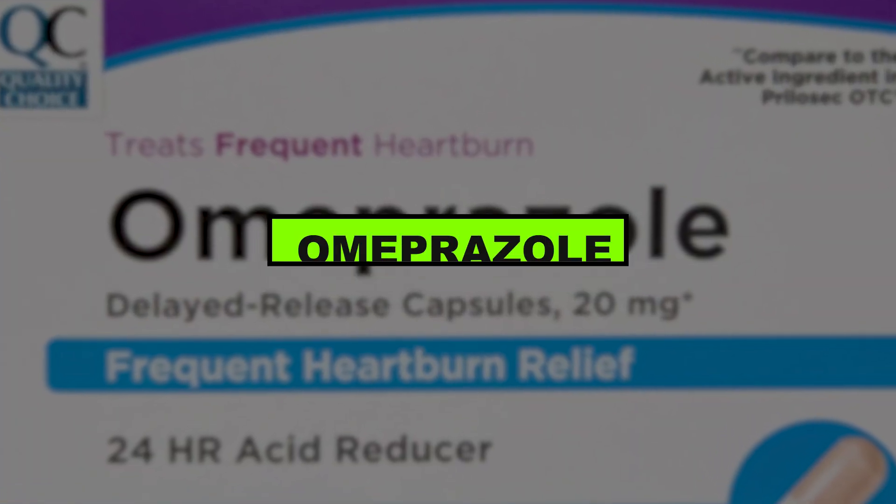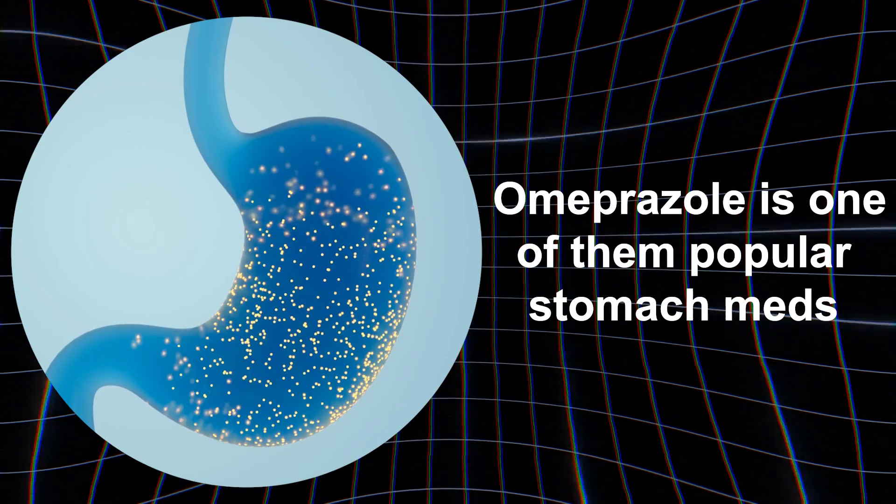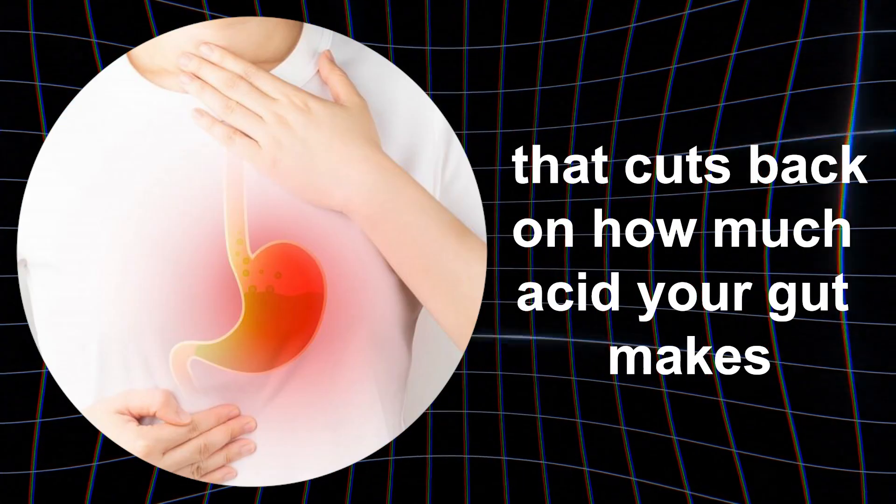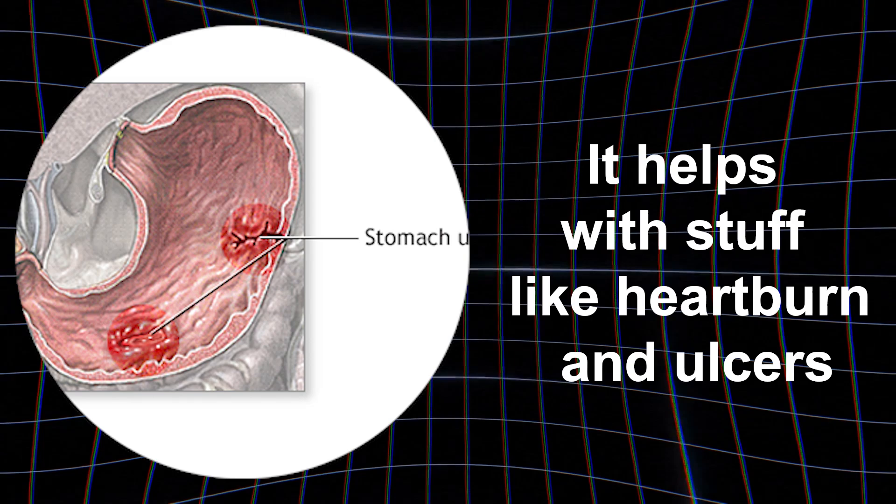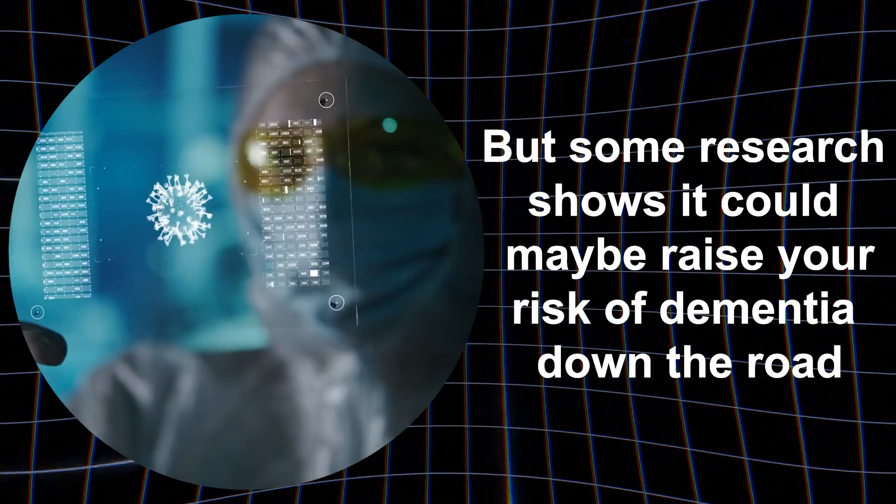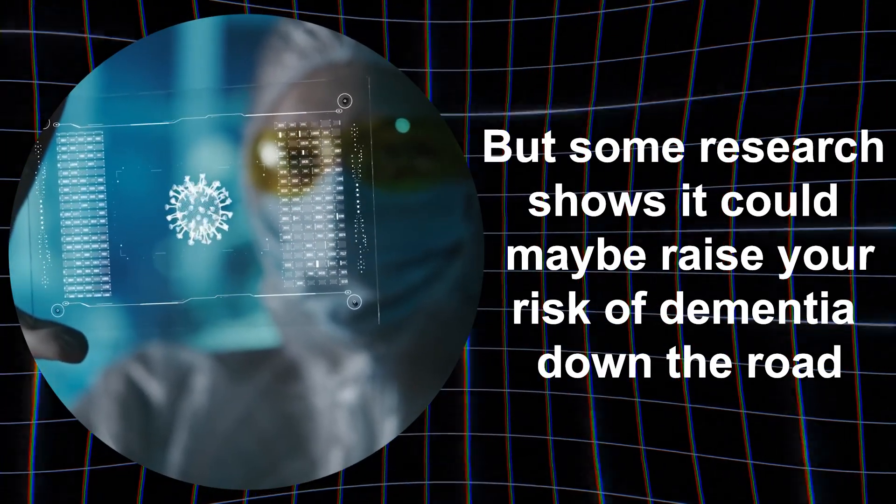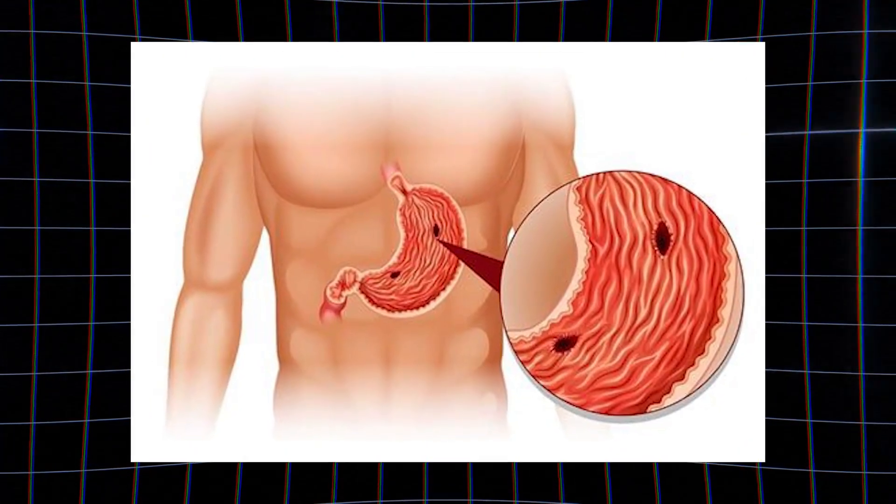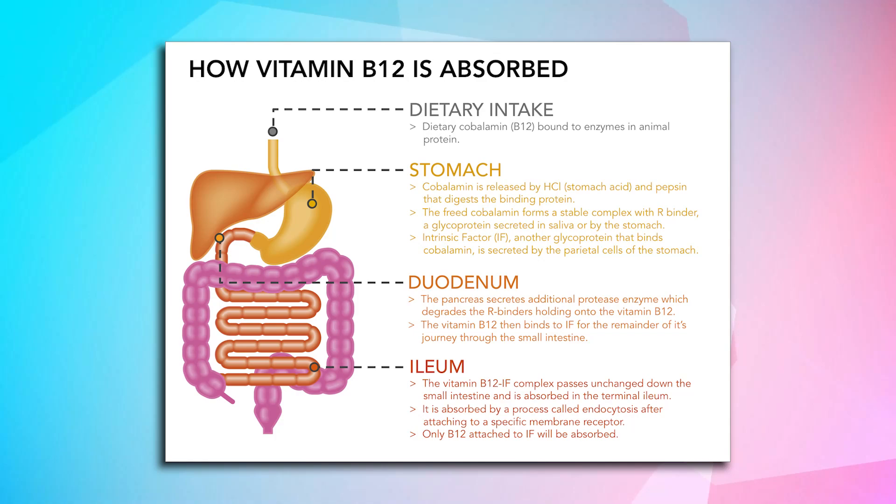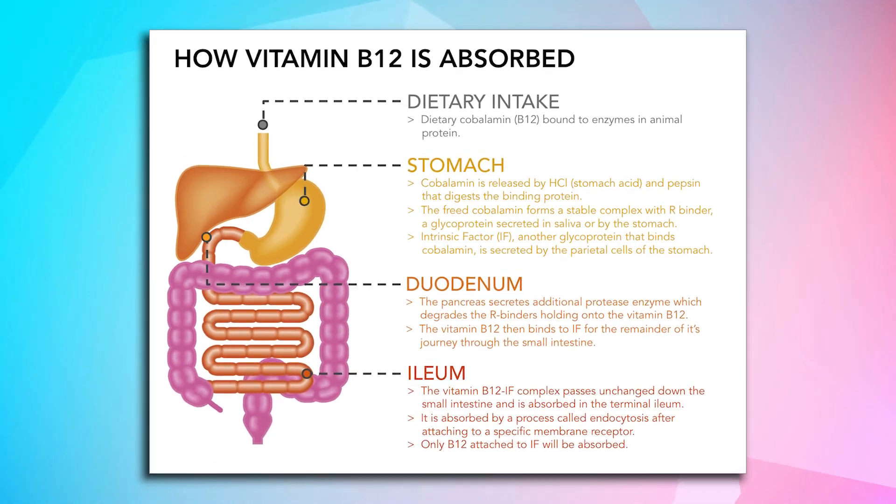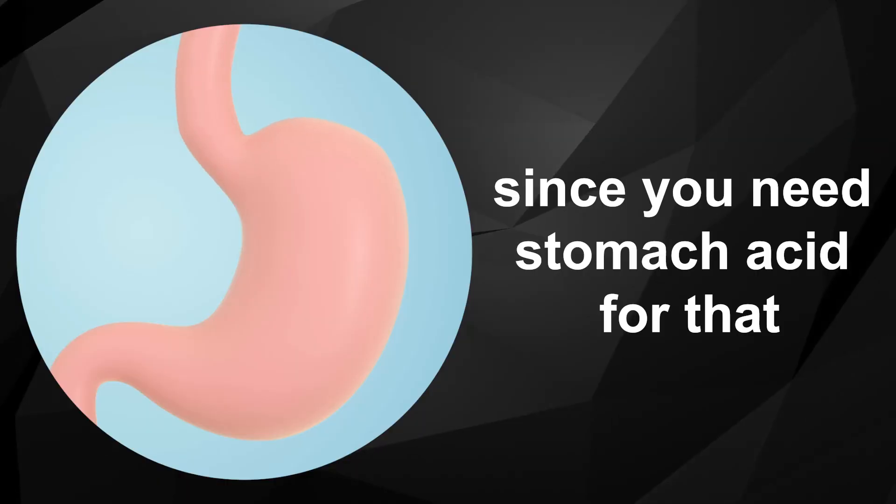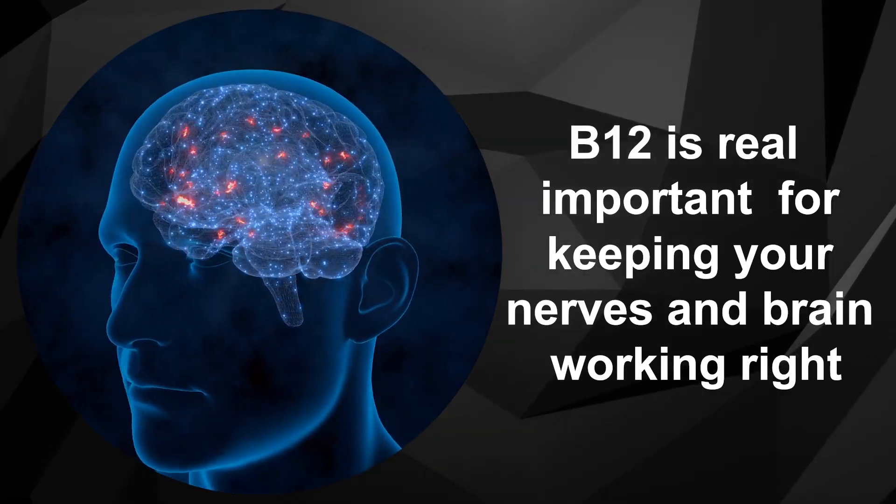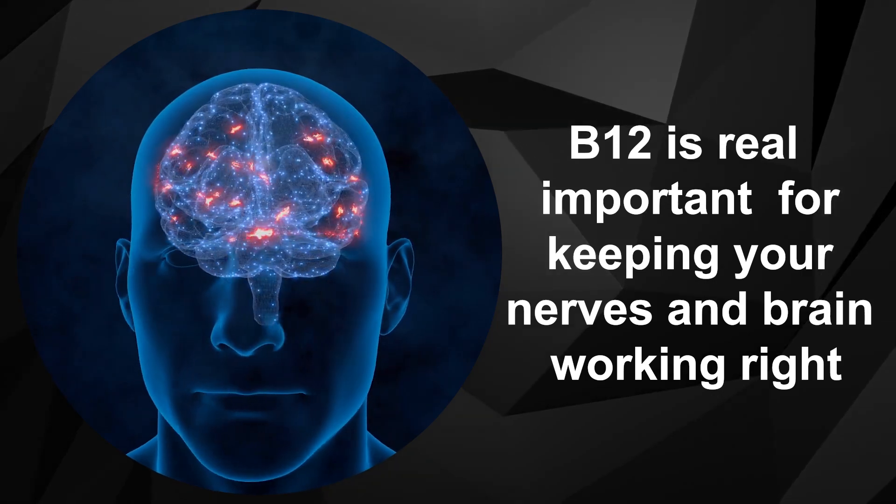One, omeprazole. Omeprazole is one of the popular stomach meds that cuts back on how much acid your gut makes. It helps with stuff like heartburn and ulcers, but some research shows it could maybe raise your risk of dementia down the road. Here's a few reasons why. First, it can stop you from absorbing vitamin B12 properly over time since you need stomach acid for that. B12 is real important for keeping your nerves and brain working right.